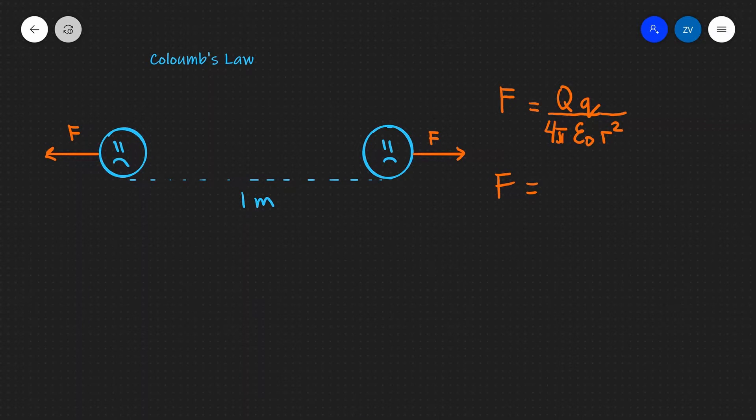We know that the charge of an electron is 1.6 times 10 to the power of minus 19. And because both of these particles are electrons, I'm going to square that number.